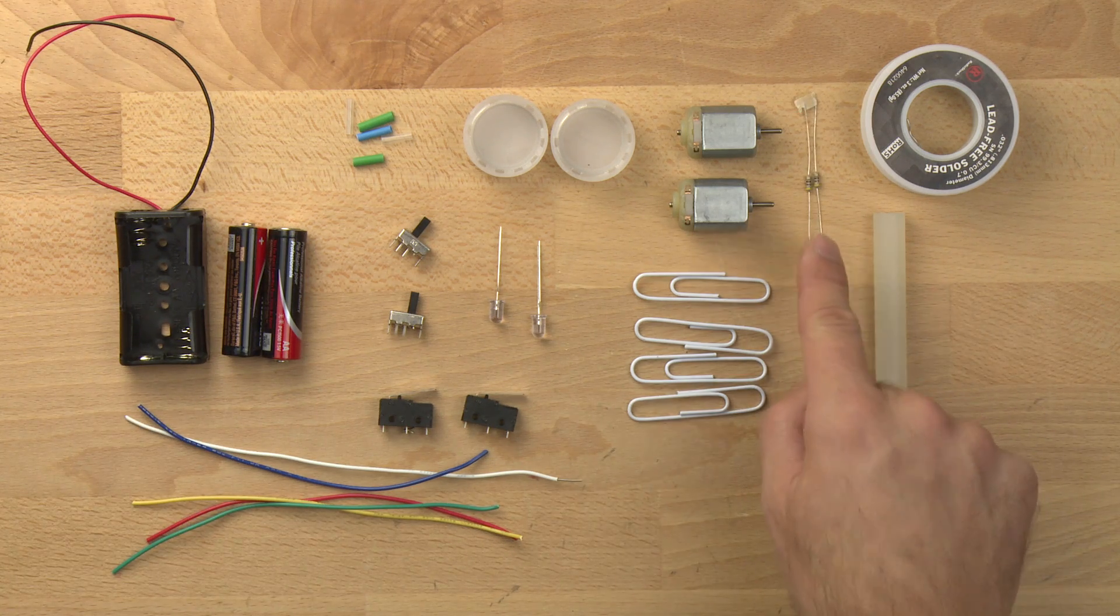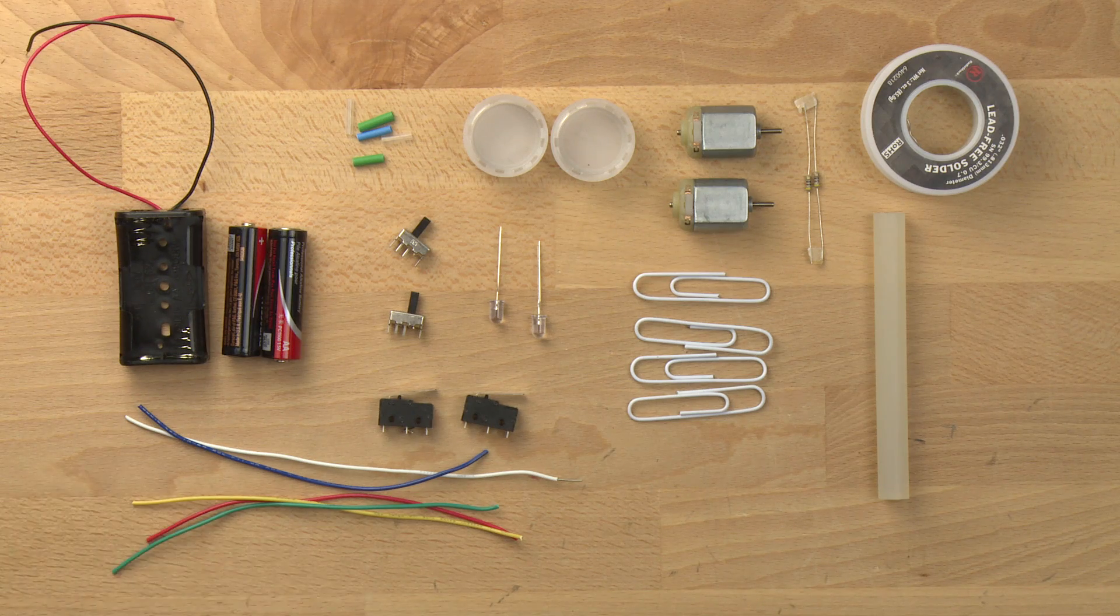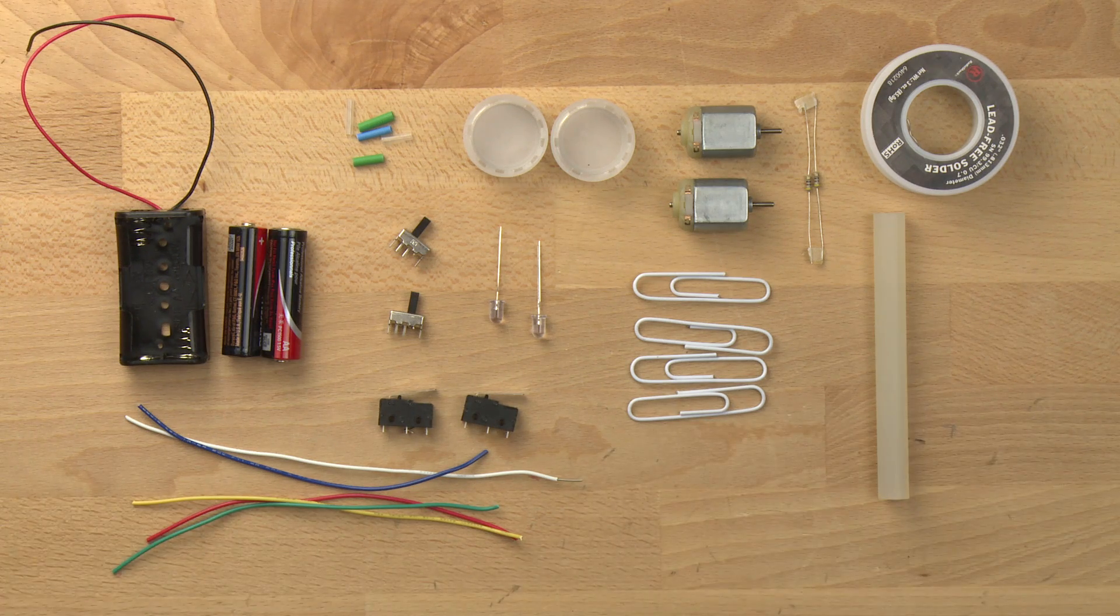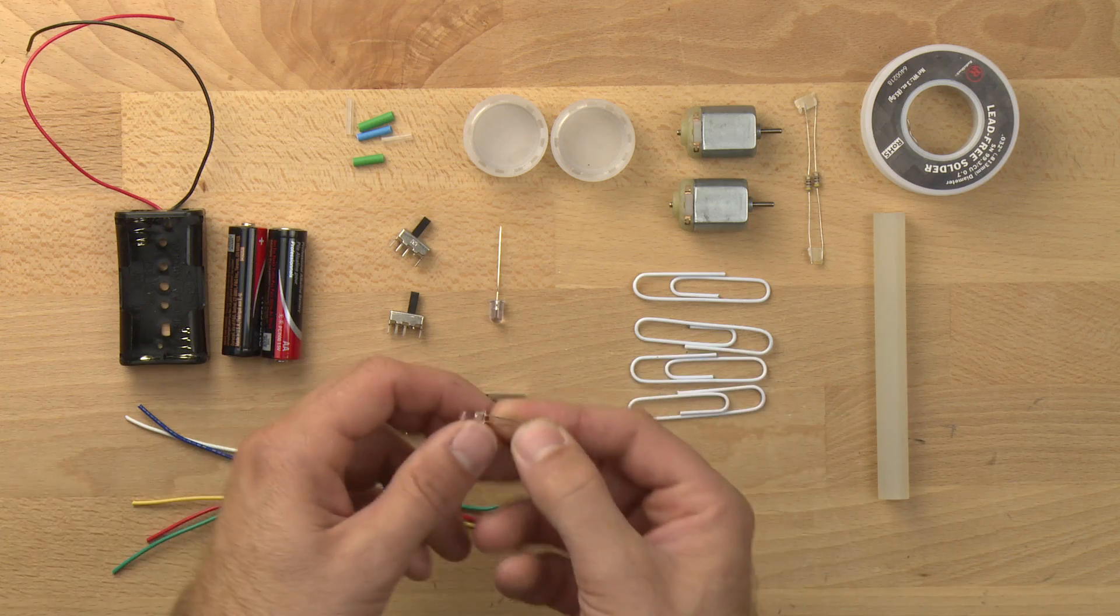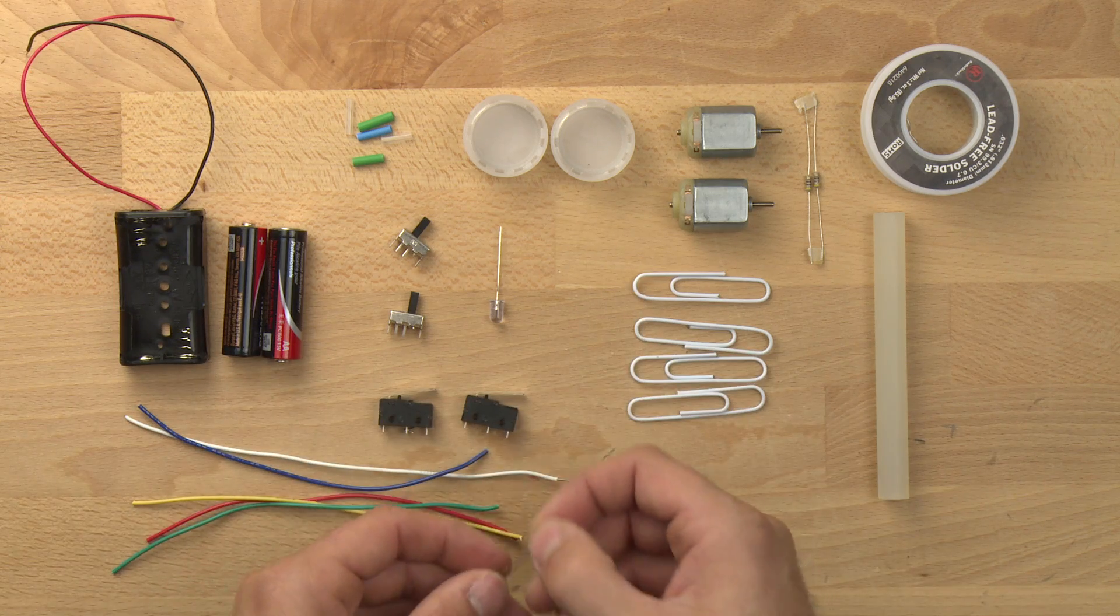We have two resistors here. These are 41 ohm resistors. You can use anywhere from around 40 to 200 ohms. It kind of depends on how bright you want your LEDs to be and what types of LEDs you choose.